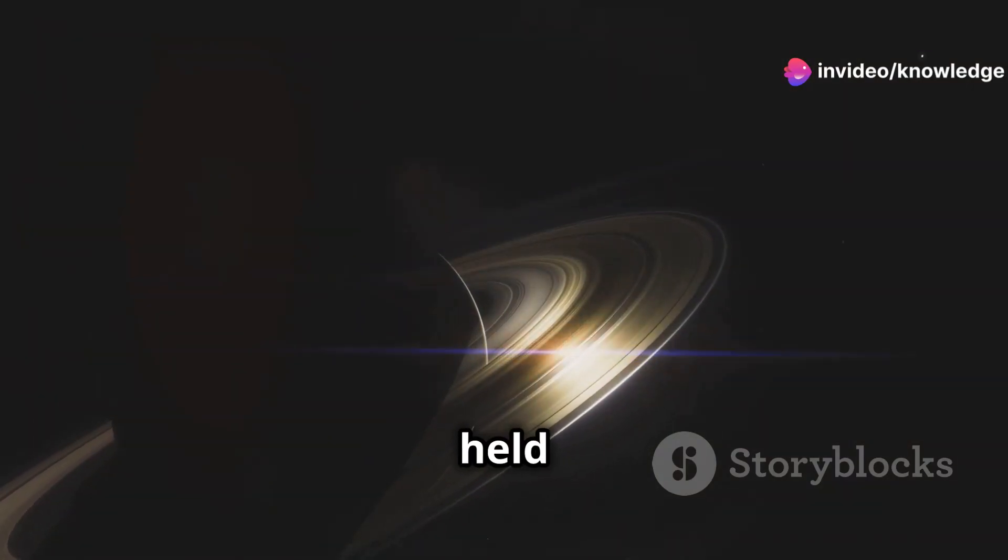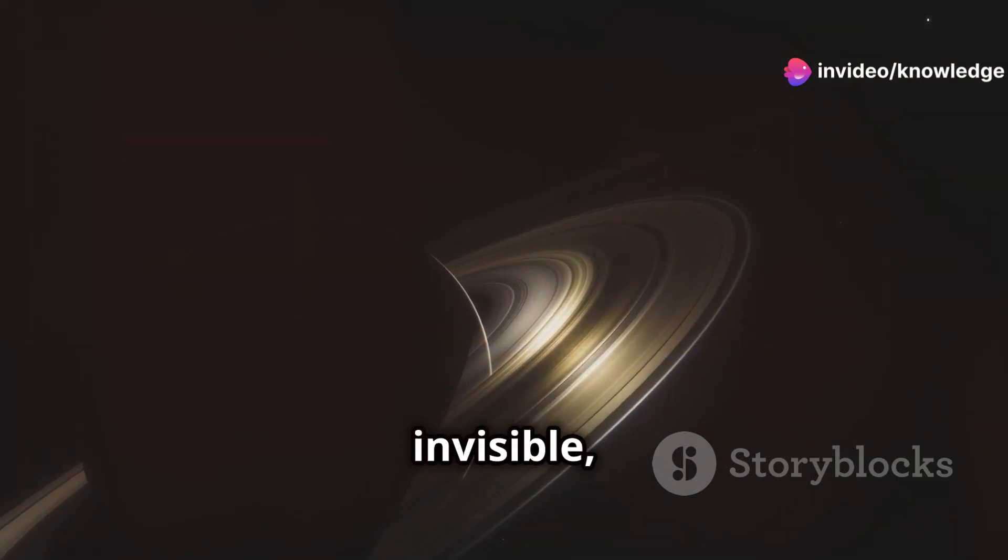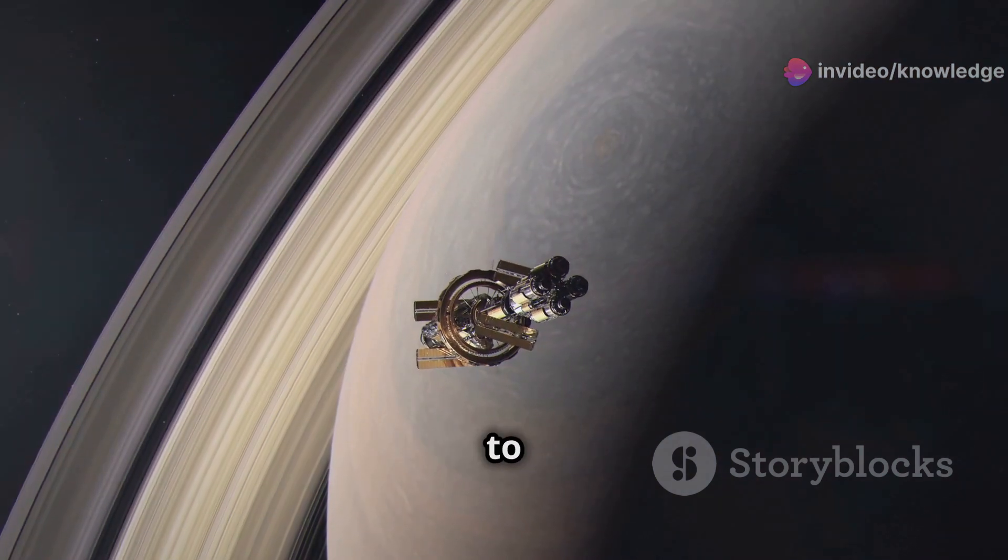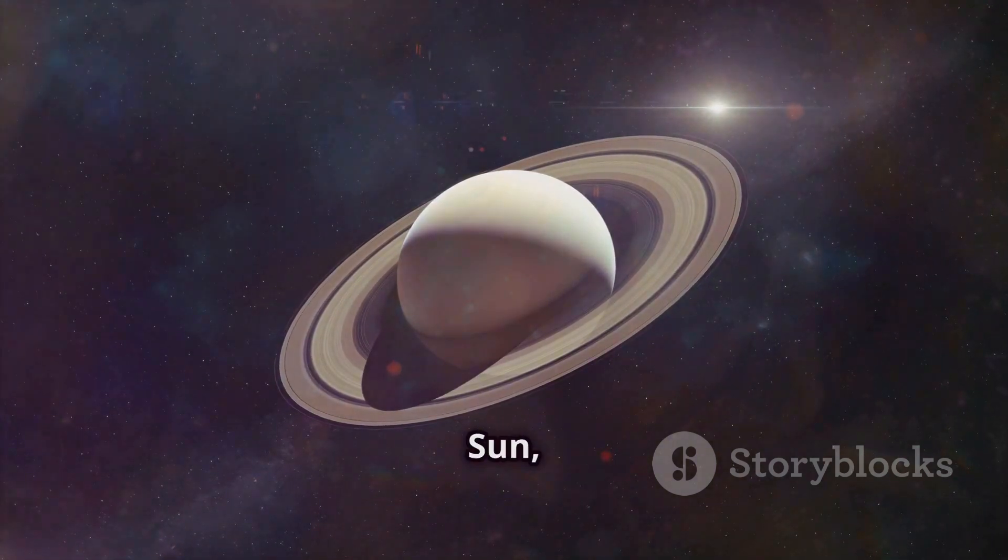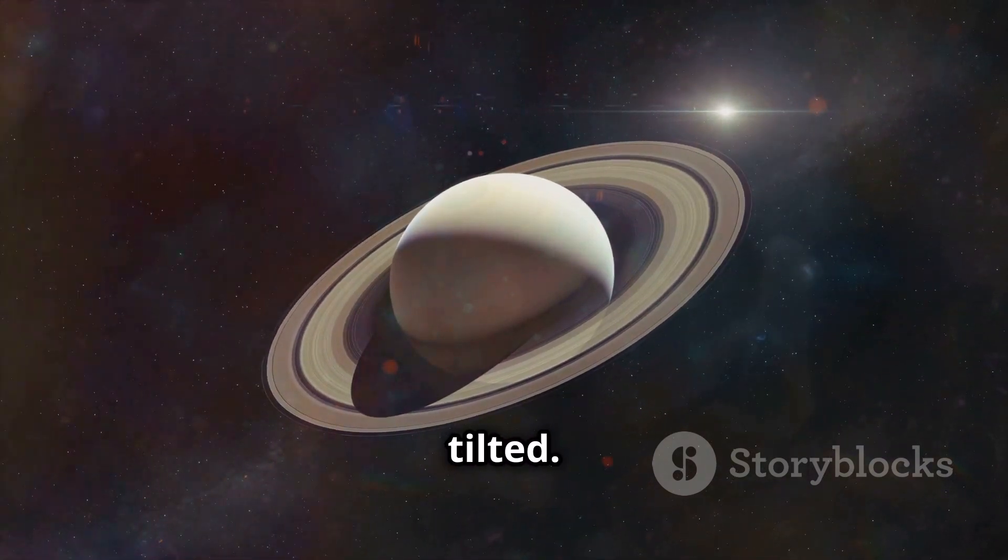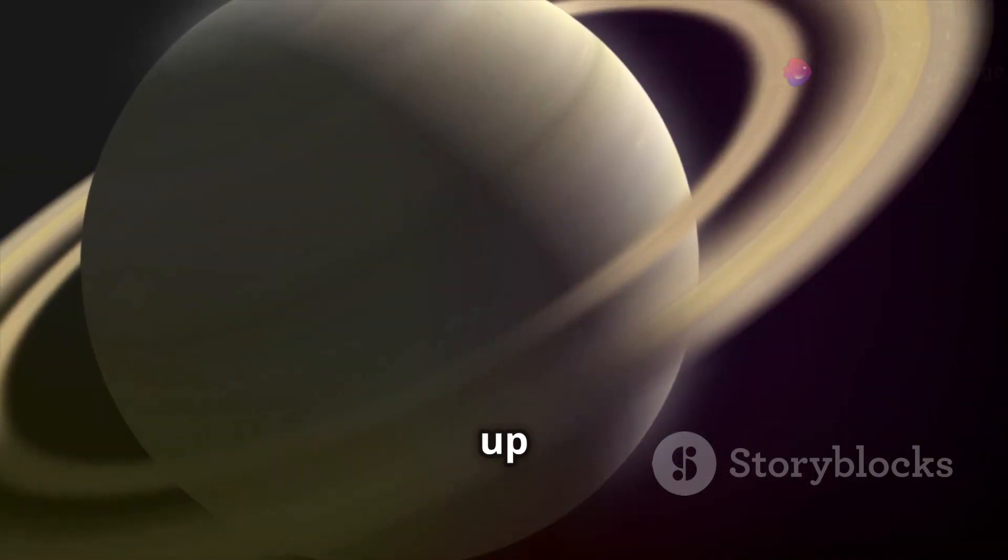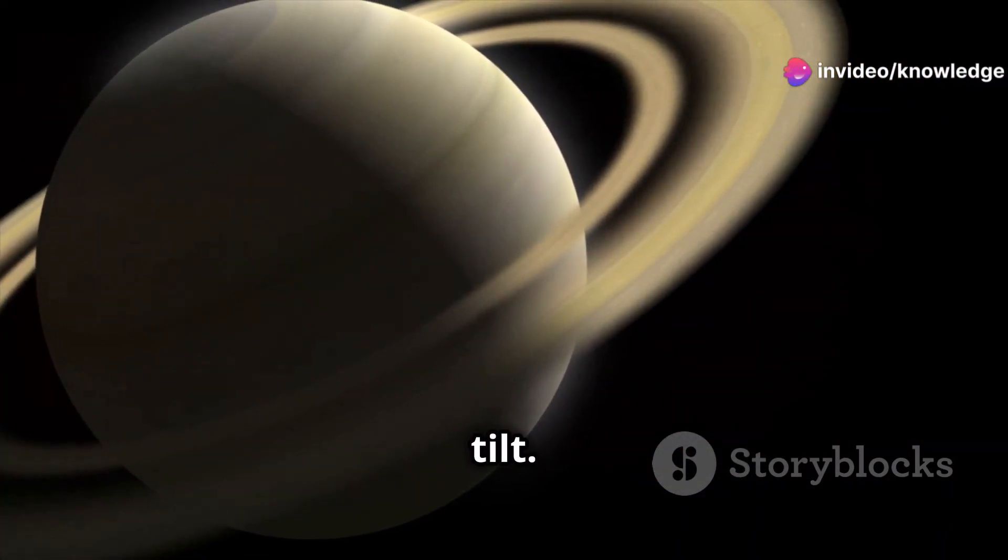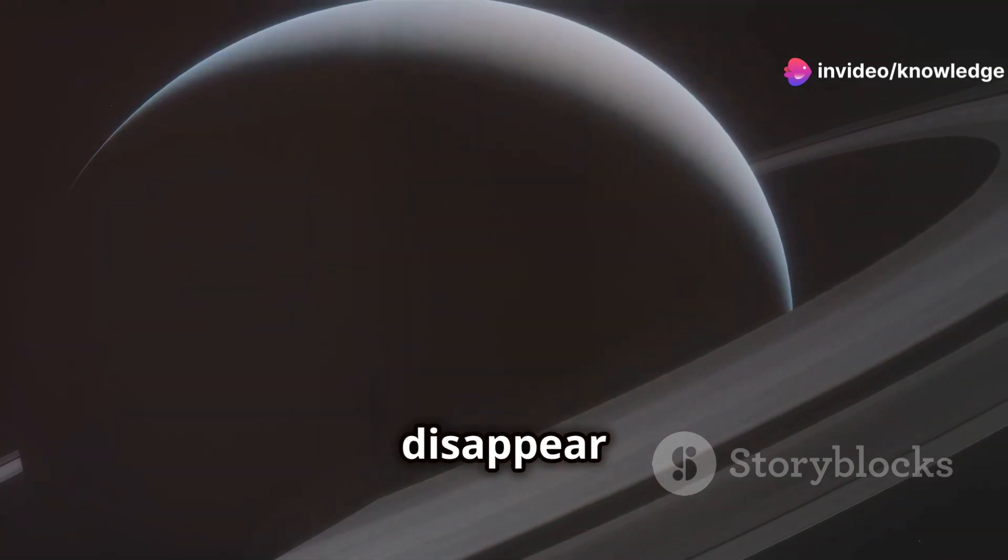Imagine a thin sheet of paper held edge-on. It's nearly invisible, right? That's similar to what happens with Saturn's rings. As Saturn orbits the Sun, its rings are also tilted. There are times when Earth's position lines up perfectly with this tilt. When this occurs, the rings appear to disappear from our perspective.